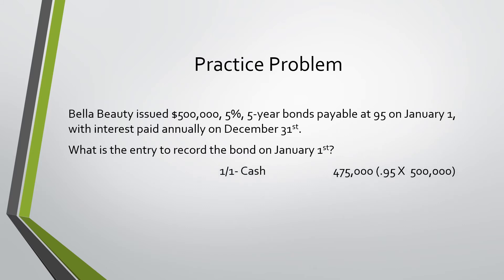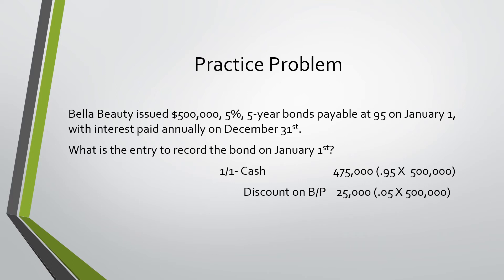We would debit cash for $475,000, because although we're taking out a bond of $500,000, we have issued it at a 5% discount, so we are only receiving $475,000. Next, we would debit discount on bonds payable for $25,000, which is the 5% discount times $500,000. And last, we would credit bonds payable for the full $500,000, because that is what we will pay back at the end.